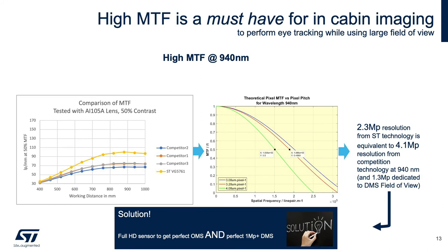Here's an example of how our MTF compares to our competitors. This is a test made by one of our customers using a standard lens at 50% contrast. Our sensor, the 5761 — this is the Robin — is much better at MTF than our competitors, at 90 line pairs per millimeter at 50% MTF. Looking at pixel pitch versus wavelength at 940 nm, we are much better than our competitors. These results were done by our customers, not by us.